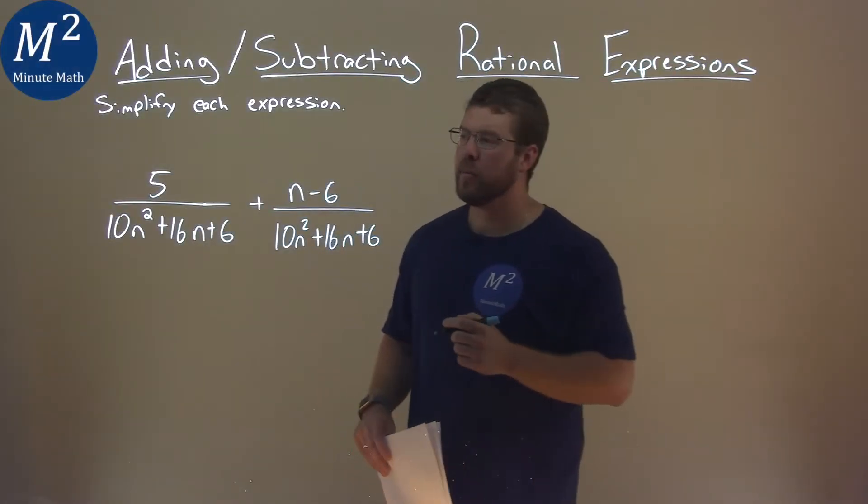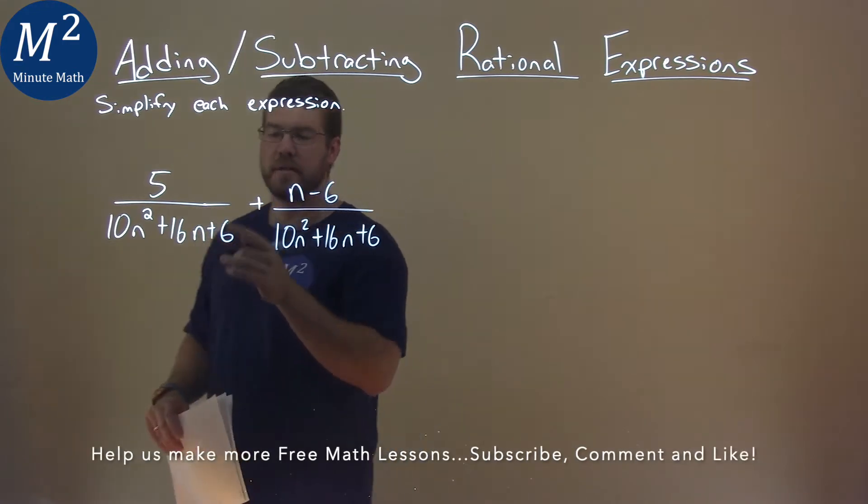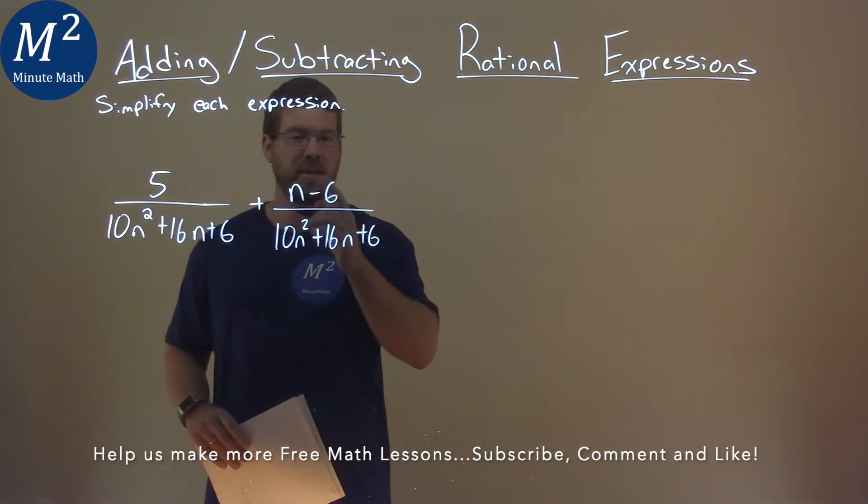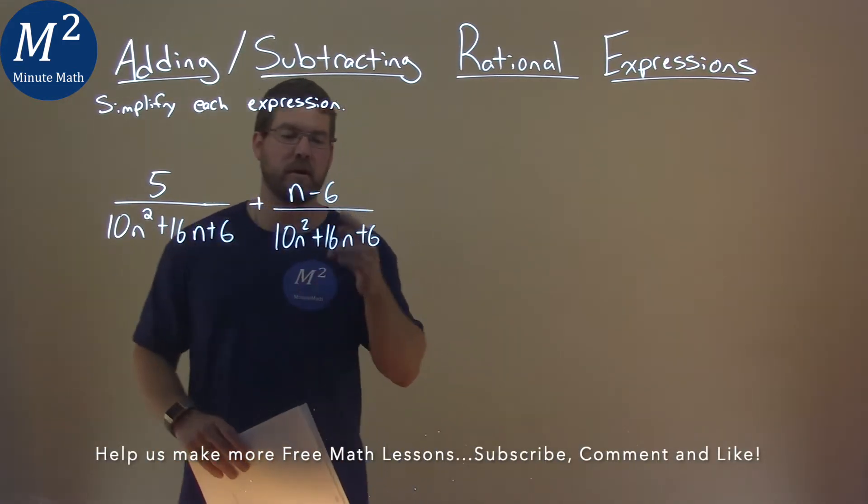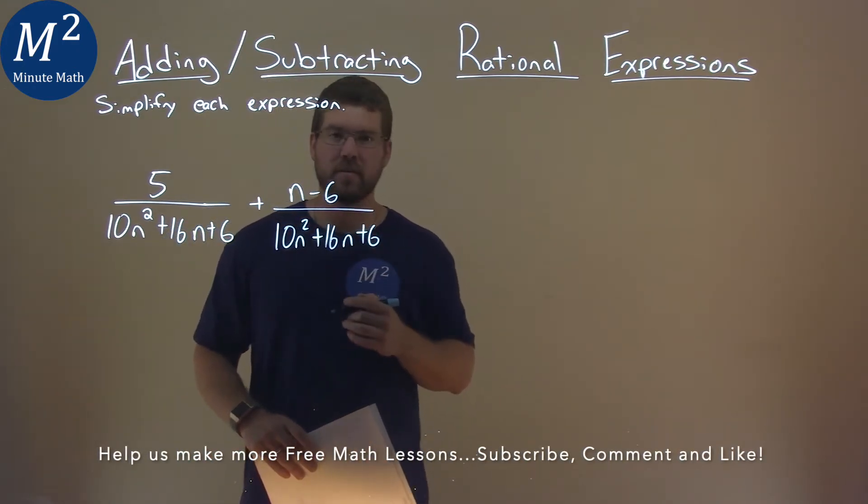We're given this problem right here: 5 over 10n squared plus 16n plus 6, plus n minus 6 over 10n squared plus 16n plus 6, and we're going to simplify this expression.